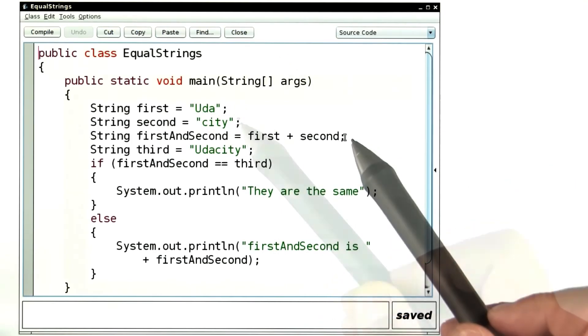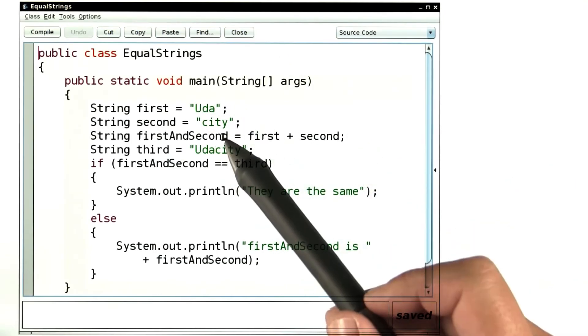I have two strings, uda and city. I concatenate the two together to form a string that I call first and second.